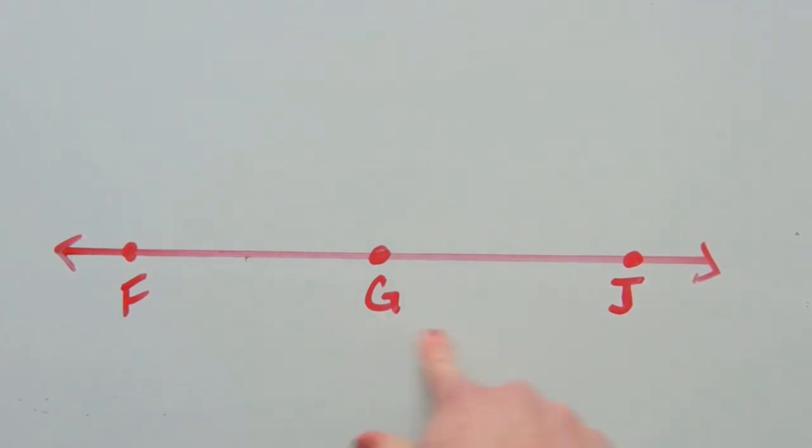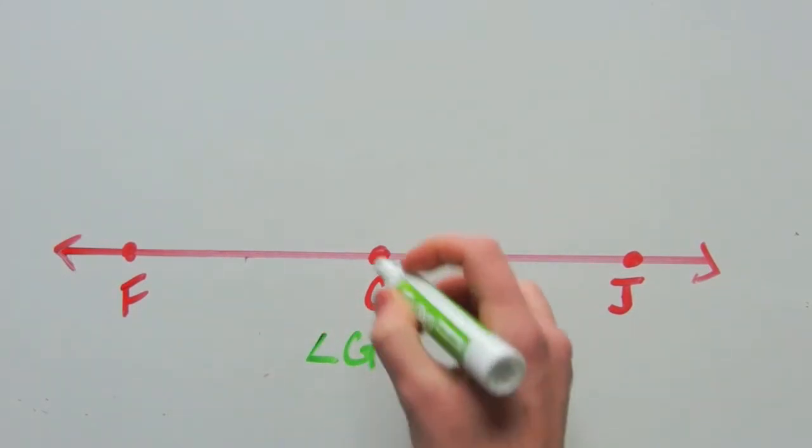And we have side GF, which is the ray G to F. So the angle we're looking to measure is this angle G.